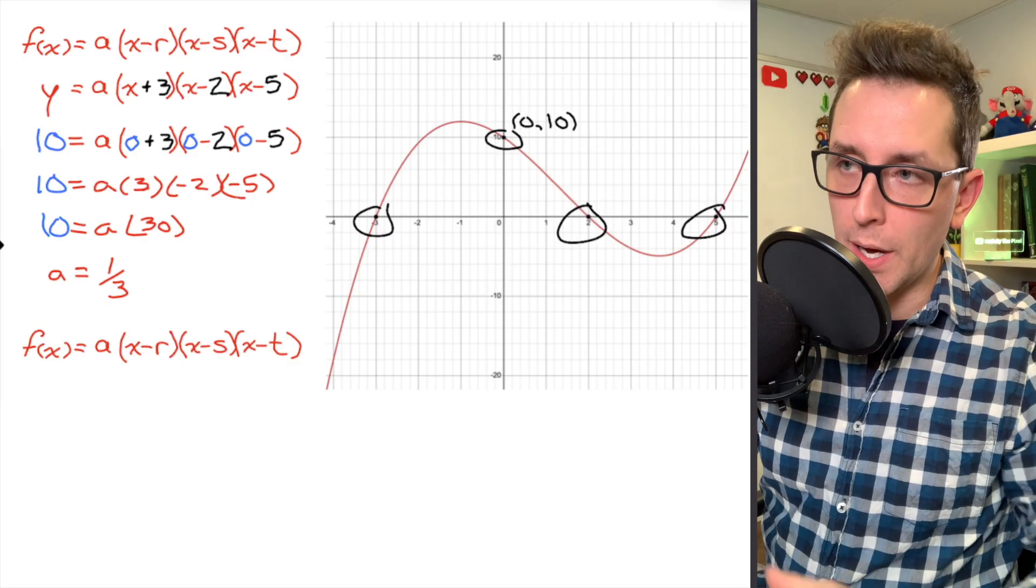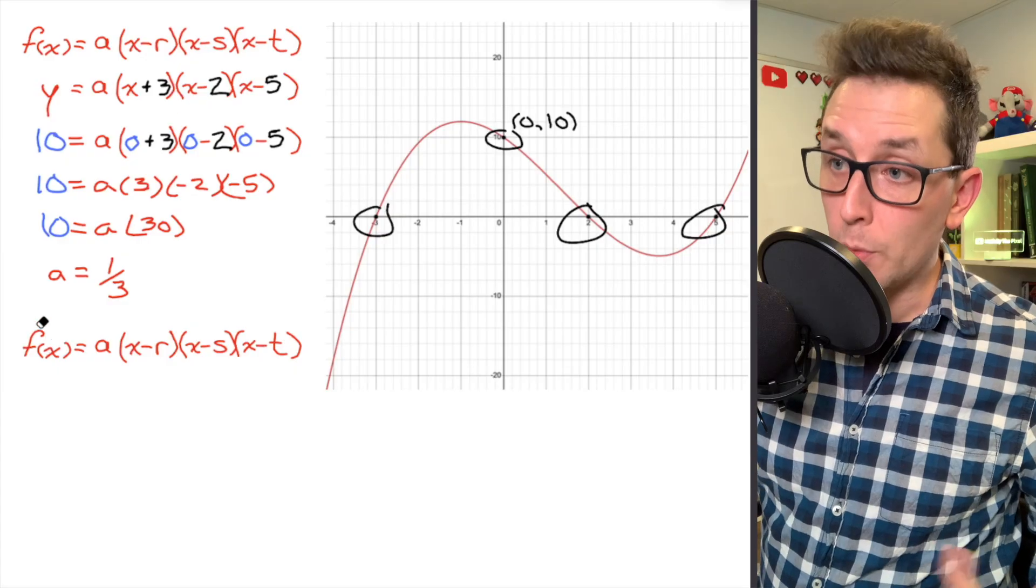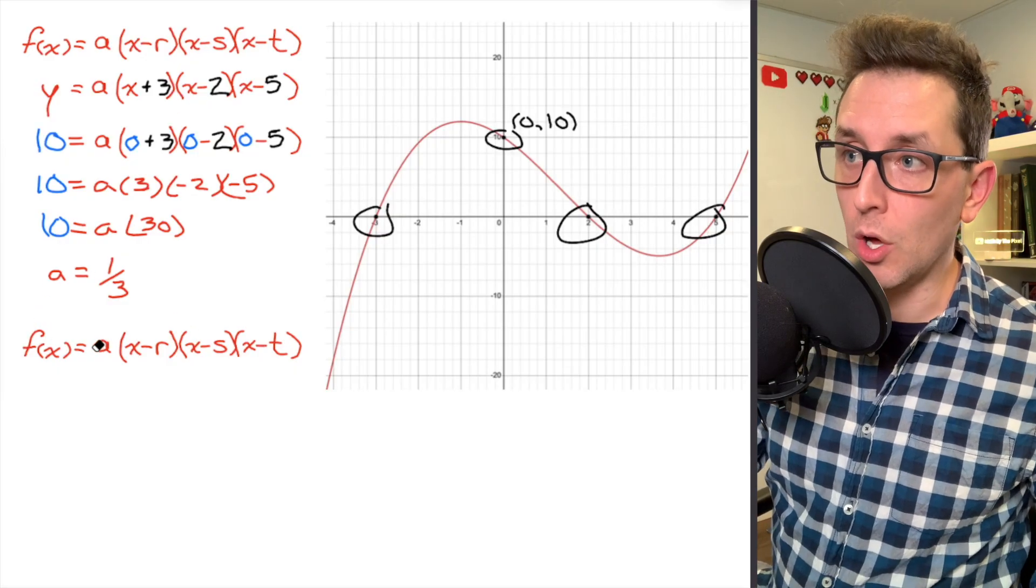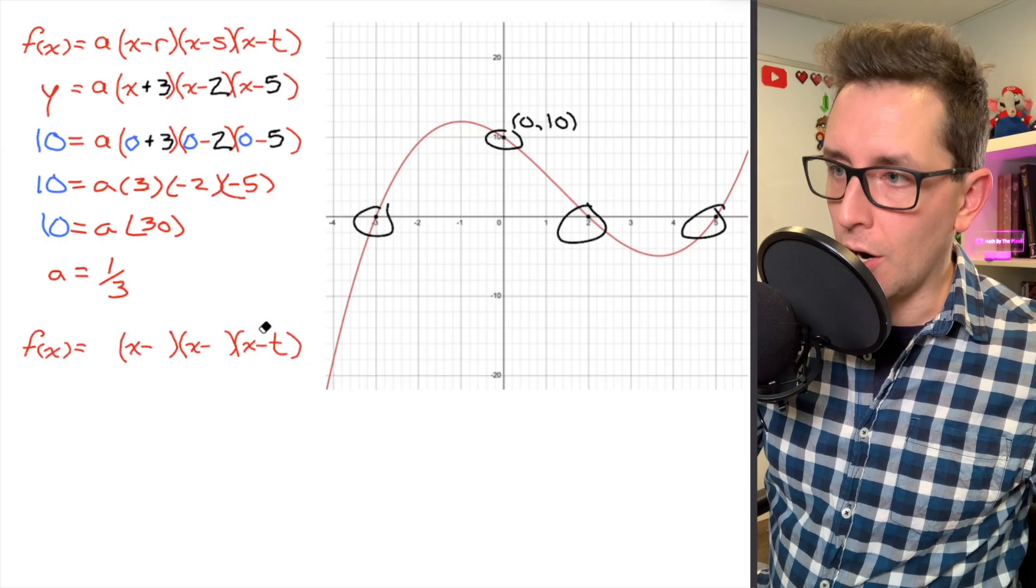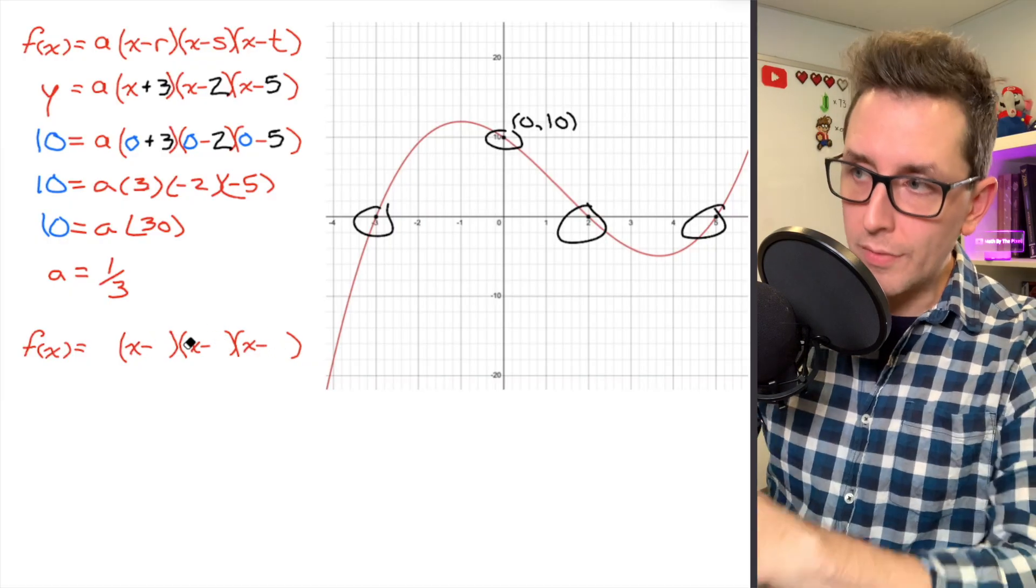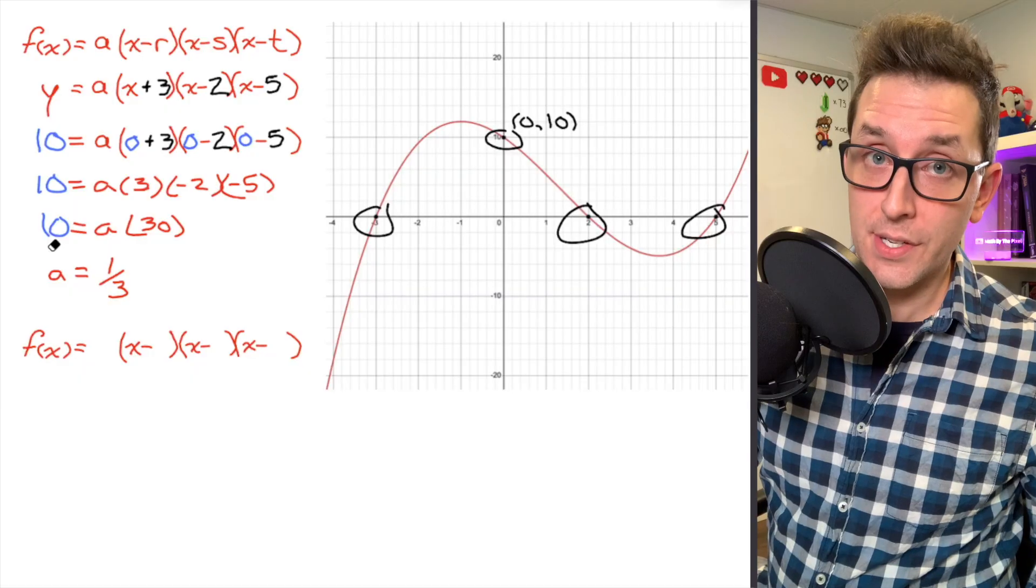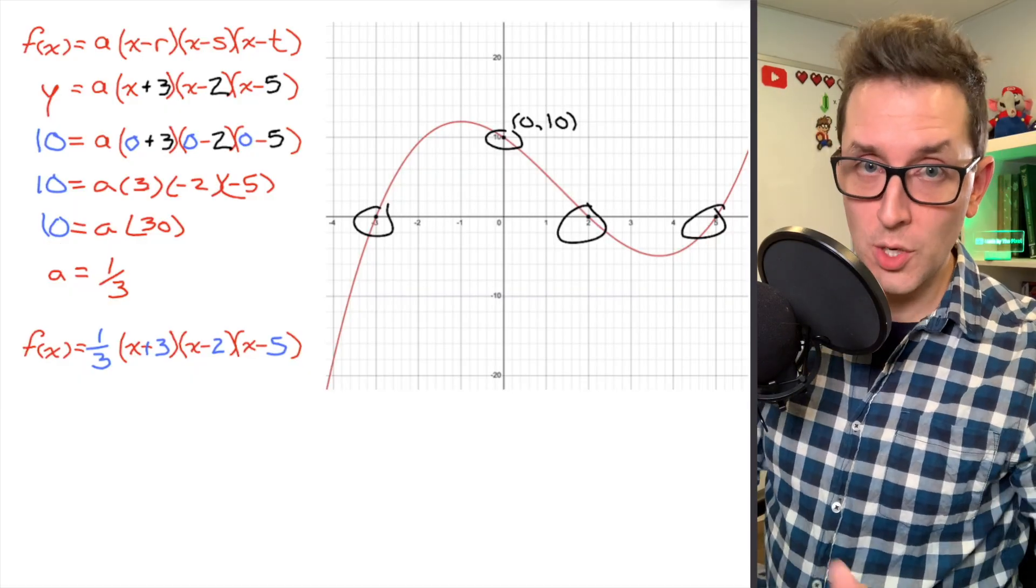Now, I'm just going to jump back to my original general equation here. And the reason for that is that I have to remember that I need to go back and substitute all of this information back into the equation. So I have to replace my a value, my r value, my s value, and my t value with all the information that I determined from my analysis. So doing that will result in this equation right here.